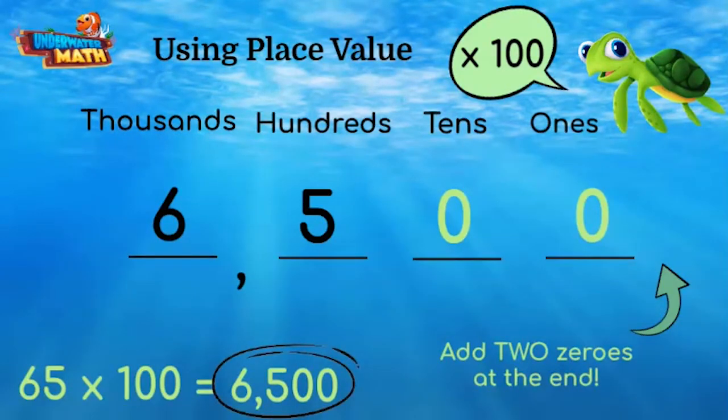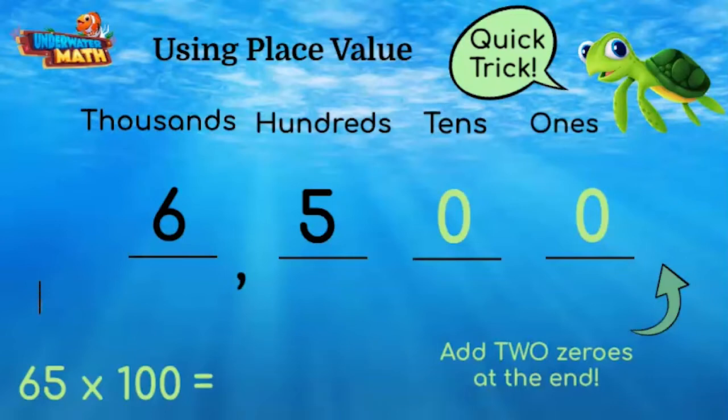65 times 100 is 6,500. I bet you can guess our quick trick for 100. You got it! Simply add two zeros on the end of the number you are multiplying by 100. Brilliant!